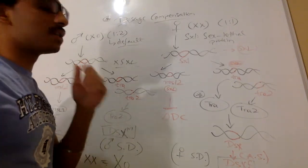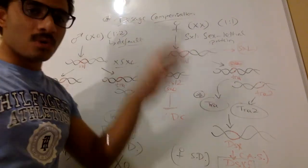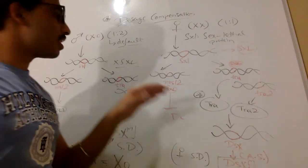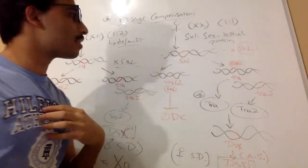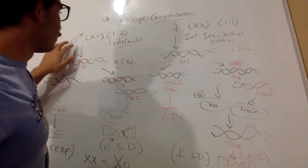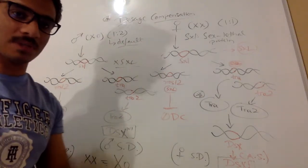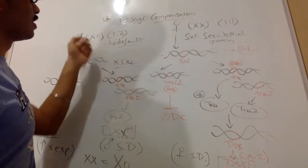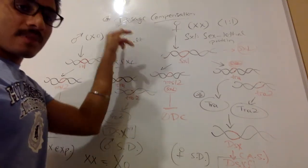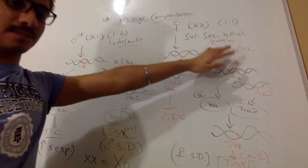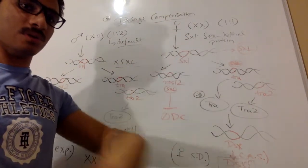The idea of dosage compensation is the same whether it's humans, Drosophila, or C. elegans — we are controlling the expression of genes on the X chromosome in males or females. In Drosophila, females have two X chromosomes and males have only one X chromosome. In humans males are XY, but in Drosophila males are XO. An important distinction is that in Drosophila, males are the default sex, whereas in humans females are the default sex.